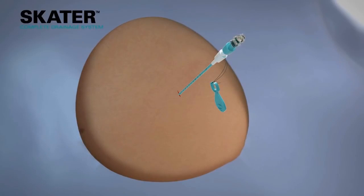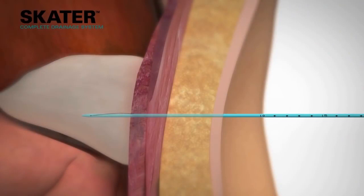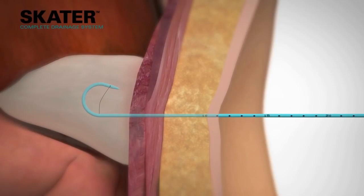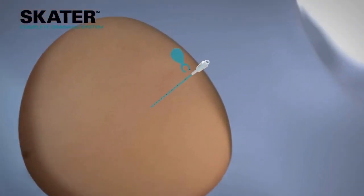After the catheter is positioned, the cannula is unlocked from the catheter hub. Holding the cannula stationary, the catheter is advanced further into the body to the desired location, ensuring that the pigtail is in the cavity. Then the cannula is fully removed.